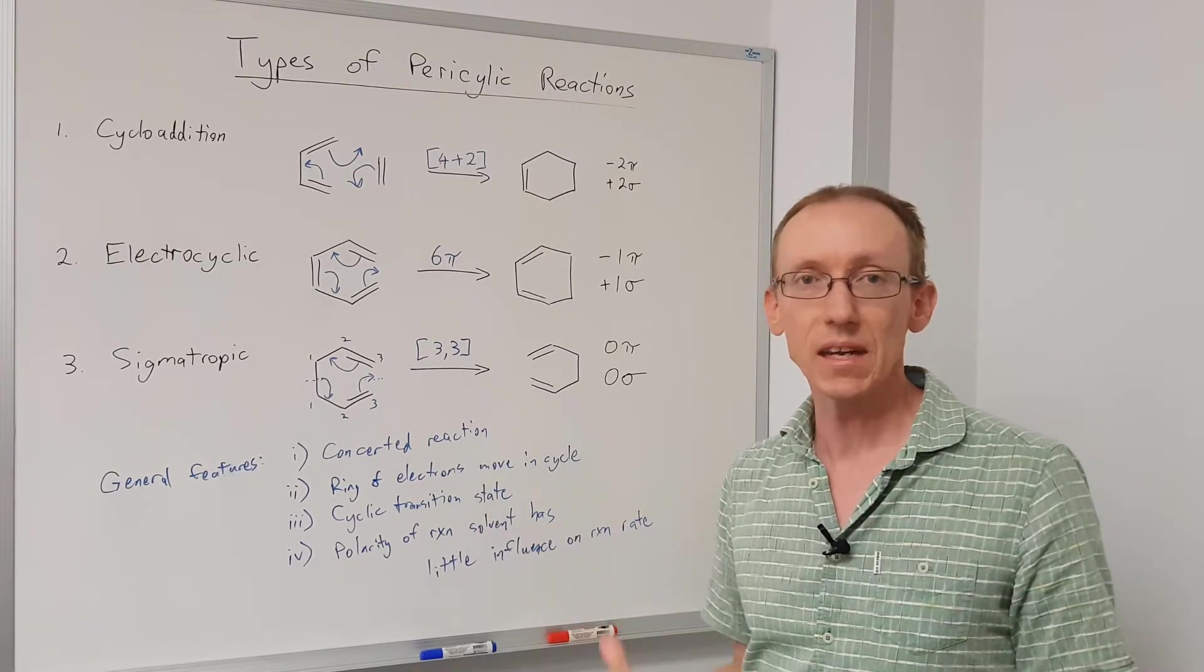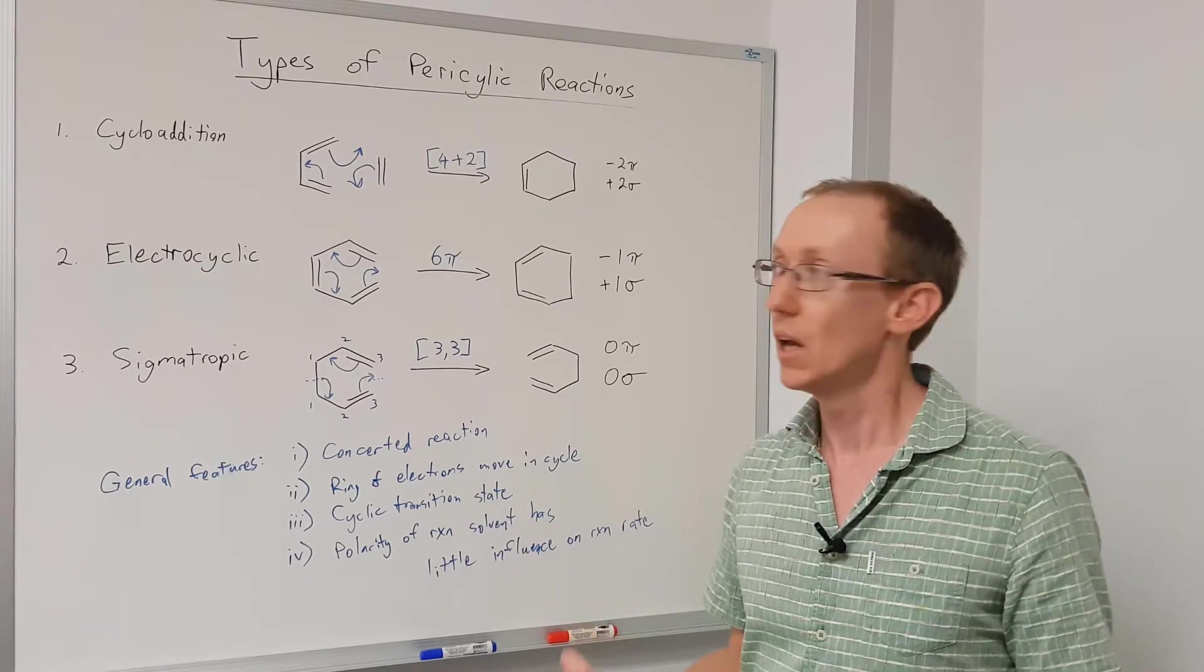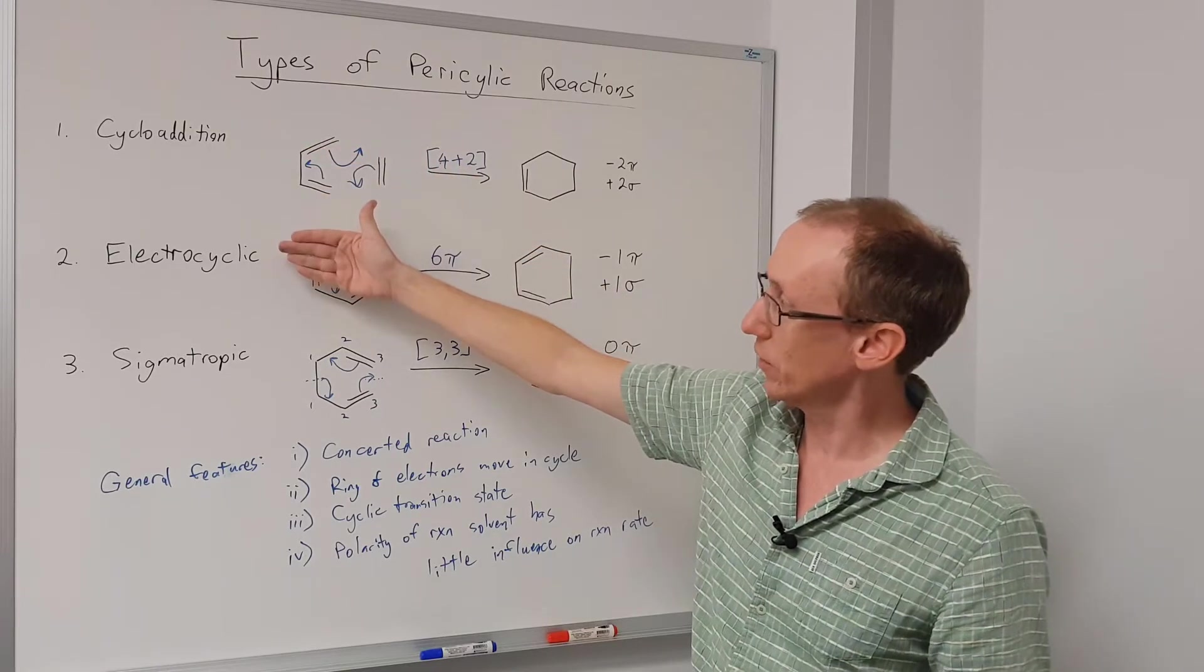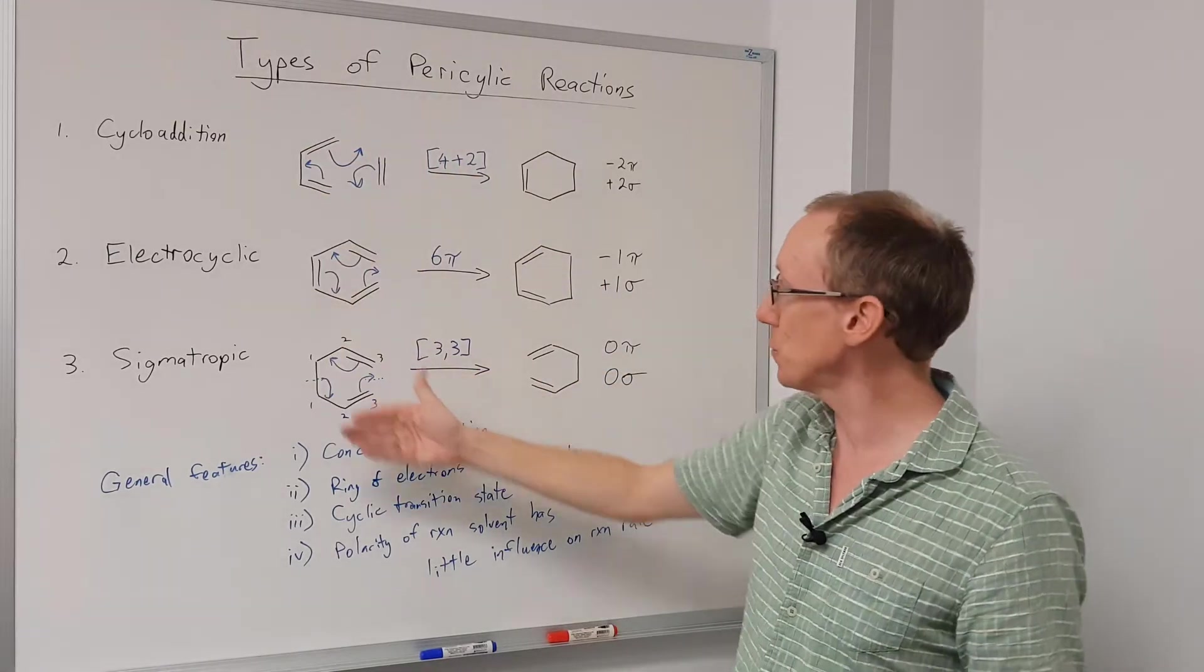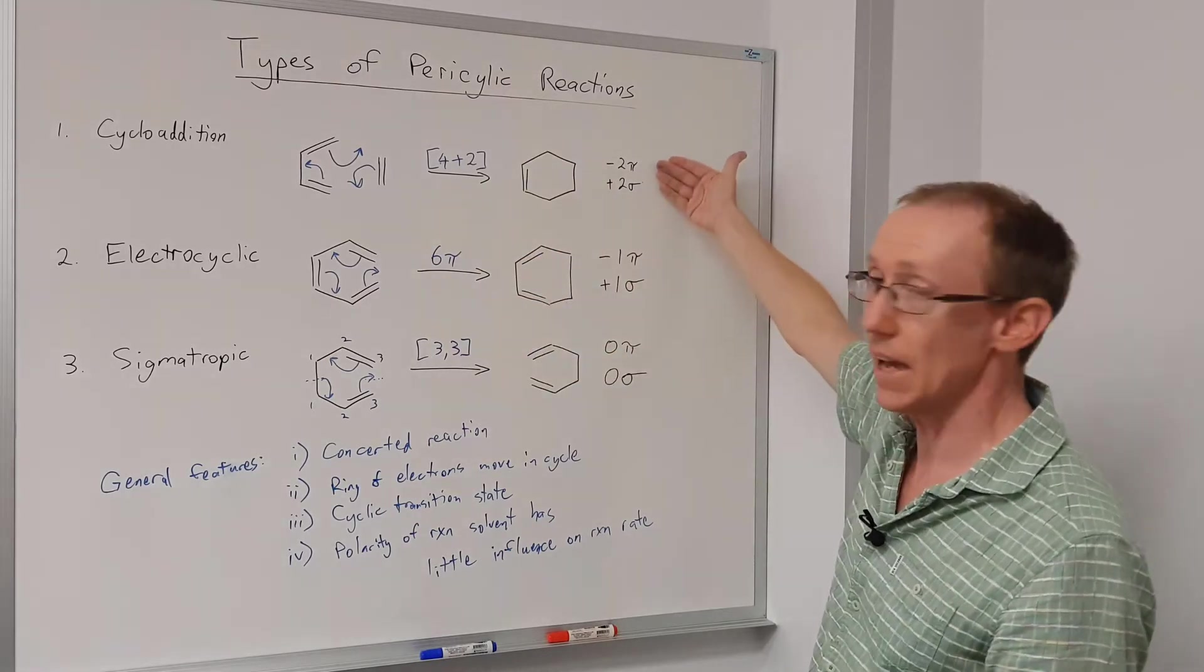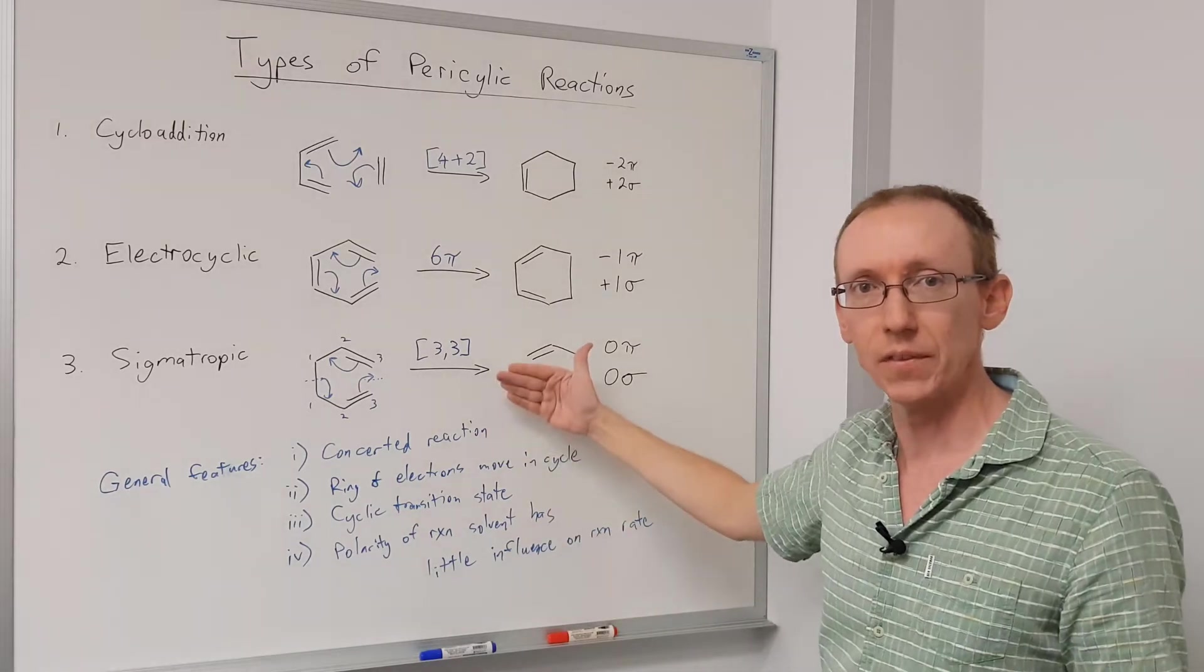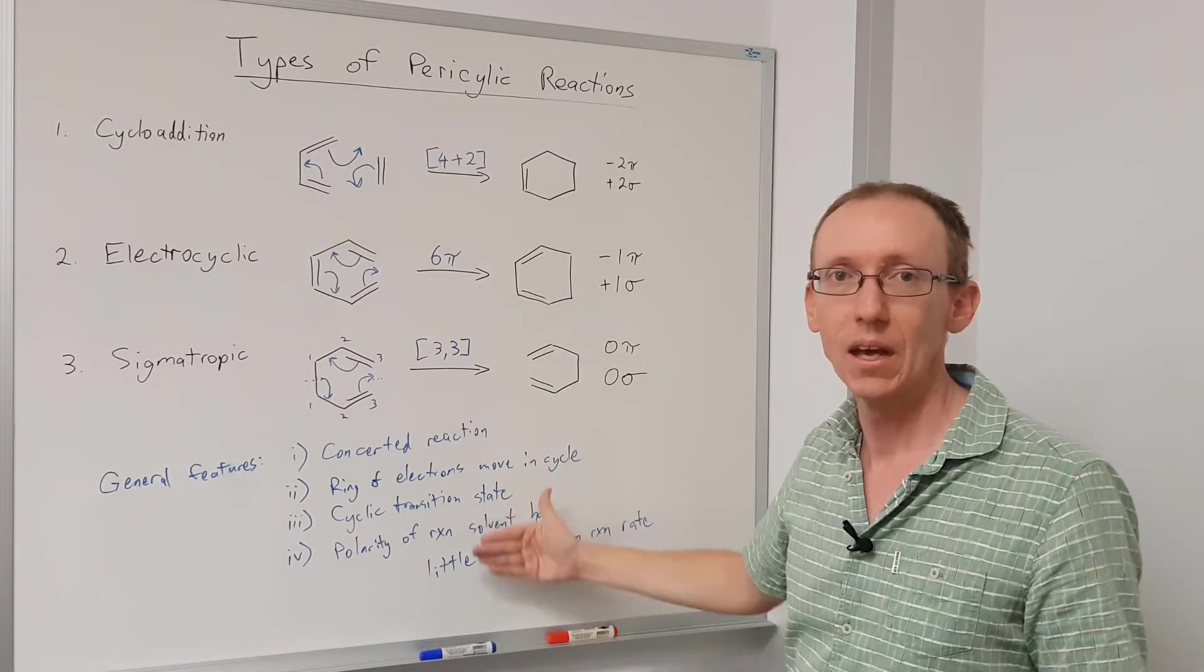And that's quite different to many other reactions in organic chemistry. Okay, so there are the three types: cycloaddition, electrocyclic reactions, and sigmatropic rearrangements. Here's how to name those reactions, here's how the bonds are changing, and there are four general features of these pericyclic reactions. Thanks for watching.